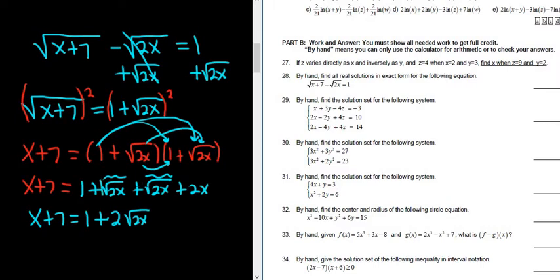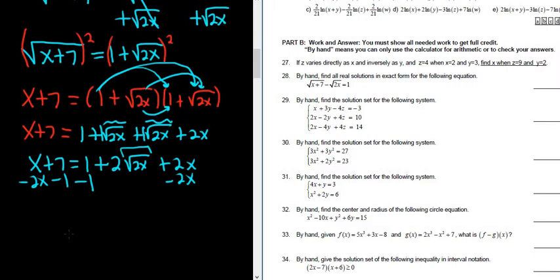There are two copies of square root of 2x — it's really 1 plus 1 times square root of 2x, so it becomes 2 square root of 2x. Now we solve for the square root of 2x by subtracting 1 and subtracting 2x from both sides. We end up with negative x plus 6 equals 2 square root of 2x.